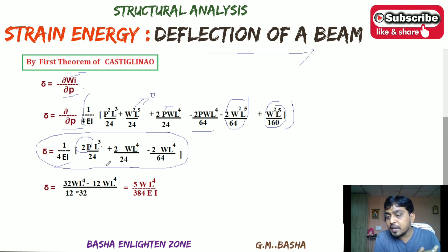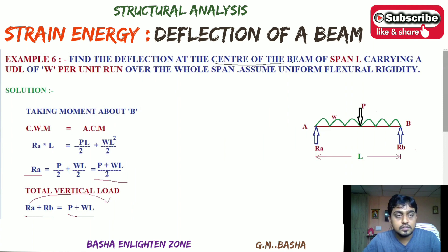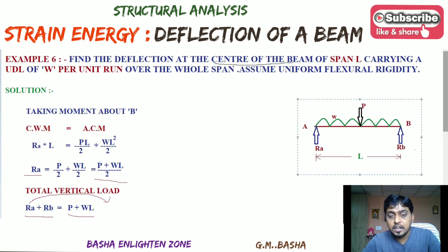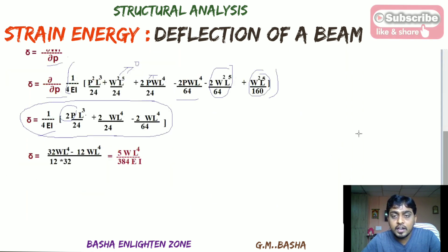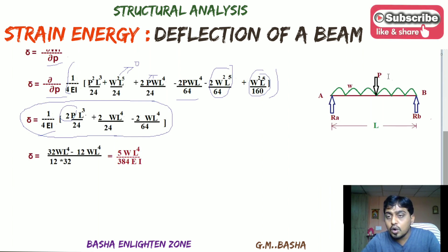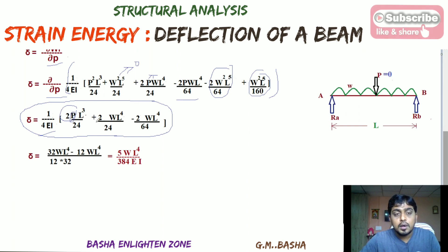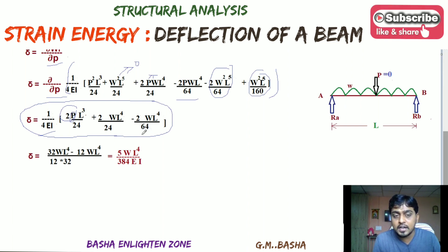Since the imaginary point load P was introduced only to apply Castigliano's theorem, we set P = 0 in the final expression. Setting P = 0 eliminates the P-containing terms, leaving: δ = (1/4EI) × (2WL⁴/24 − 2WL⁴/64). Taking LCM and simplifying gives the deflection at the center of the simply supported beam as δ = 5WL⁴/384EI.